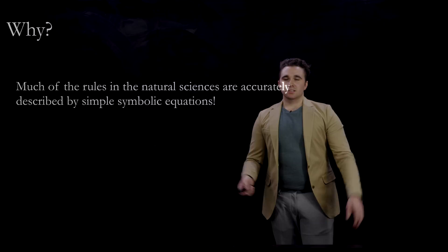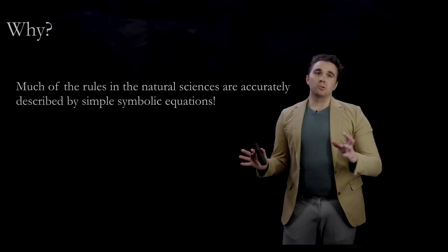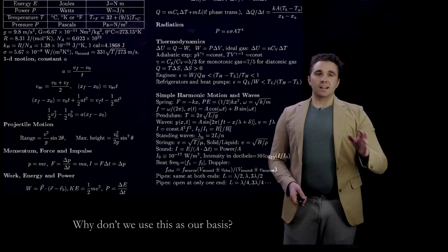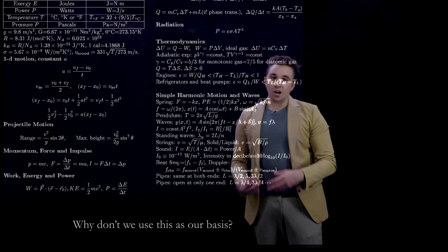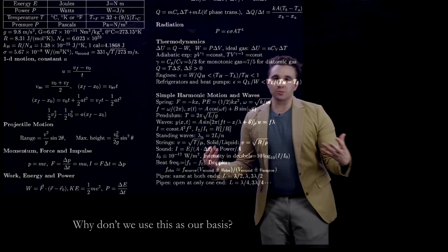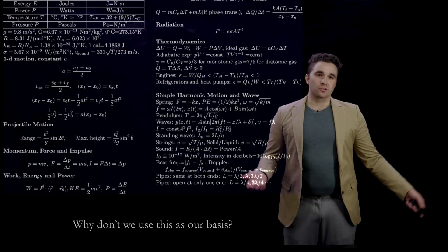Why do we want to do this? Many rules in physics and natural sciences are accurately described by simple symbolic expressions. Looking at a physics 101 cheat sheet, so many expressions are just simple analytic equations and they are extremely precise. This symbolic basis is so good for physics — it's interpretable, concise, and easy to compute. That's the motivation for symbolic regression.